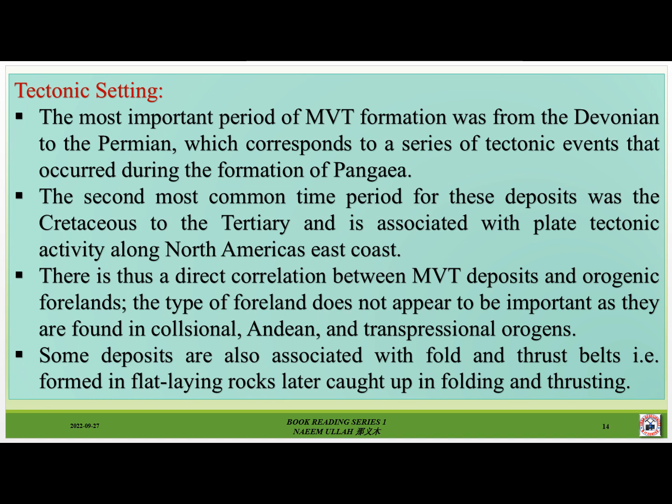There is a direct correlation between MVT deposits and orogenic forelands. The type of foreland does not appear to be important, as they are found in collisional, Andean, and transpressional settings. Some deposits are also associated with fold-and-thrust belts formed in flat-lying rocks later caught up in folding and thrusting.